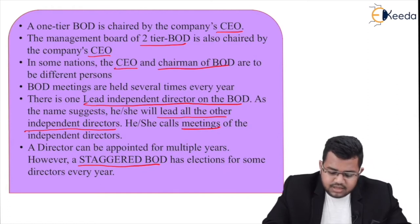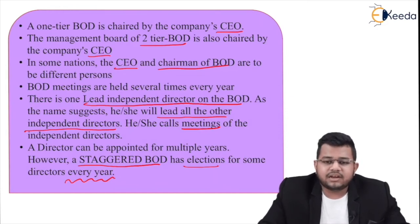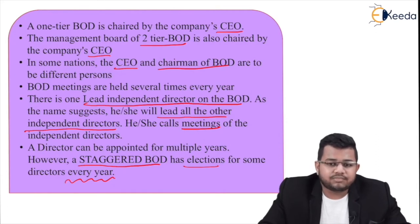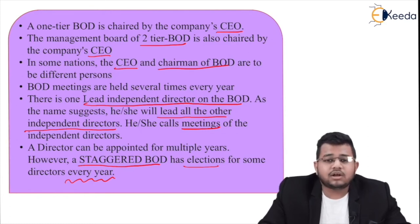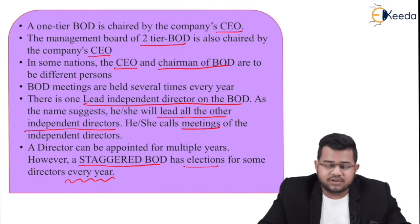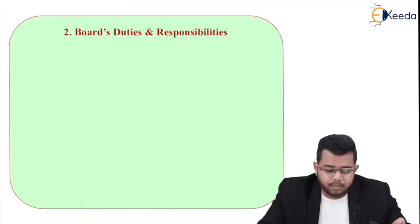A director can be appointed for multiple years. However, a staggered board of directors holds elections for some directors every year. In a staggered BOD, some directors have to be reappointed every year. So even if appointed for 10 years, if a director commits fraud in year two, the board will not re-elect them in year three. Some directors will have to be reappointed at every AGM.